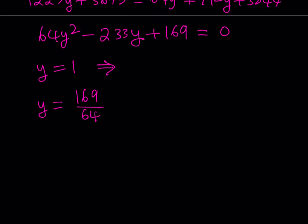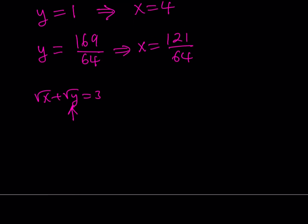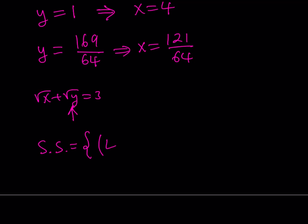So we have our y values. Plugging them back in: if y equals 1, the original first equation gives x equals 4. If y equals 169 over 64, taking its square root gives 13 over 8; subtracting from 3 gives x equals 121 over 64. Plugging these values in, they satisfy both original equations, so these are our valid solutions. The solution set is (4, 1) and (121/64, 169/64).